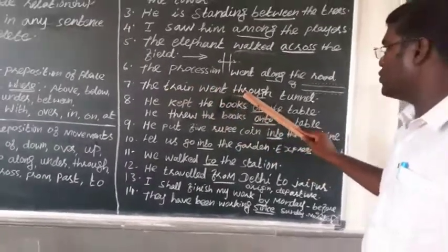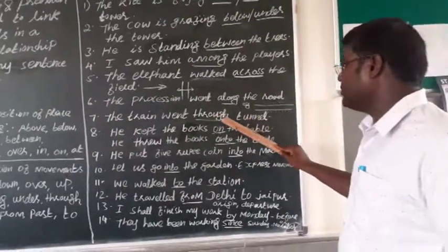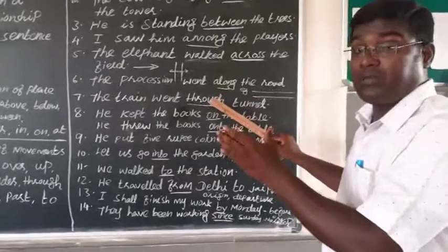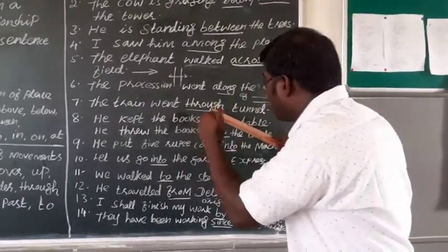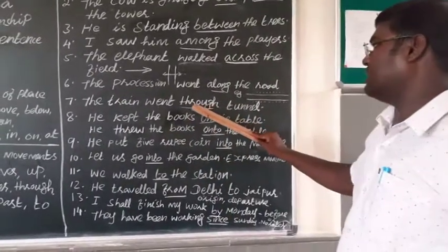Now, next, the train went through the tunnel. Through means, showing the direction. How it went? Went through the tunnel. It went through the tunnel. Direction.